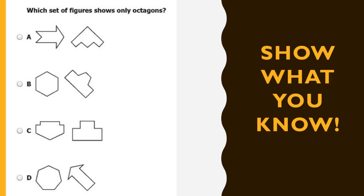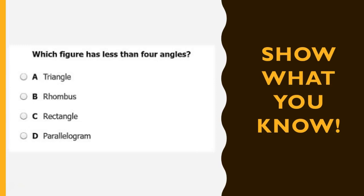Take a look at this one. I want you to look at all these pairs — there's only one where both of them are octagons. Can you figure out which ones only show octagons? And then look at this question that came from the SOL released questions. It says: which figure has less than four angles? So you have to remember all of these words — which one has less than four angles?